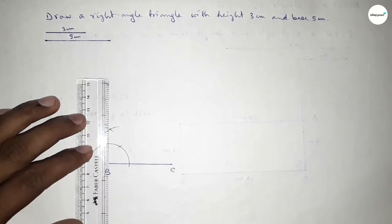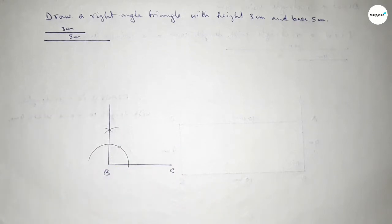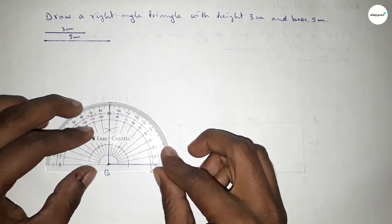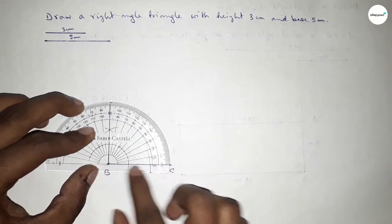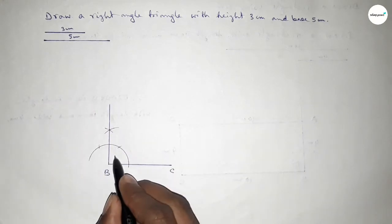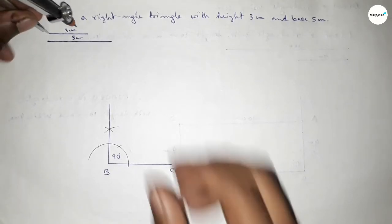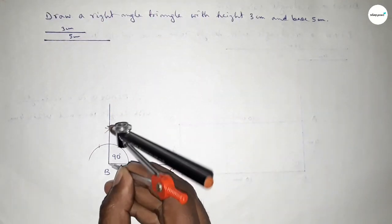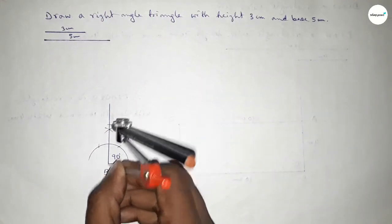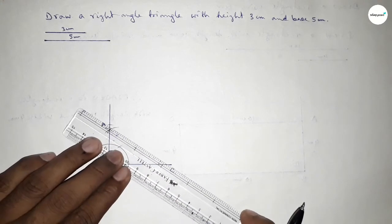Joining this side to get a 90 degree angle. Checking — this is a perfectly 90 degree angle. Now taking the length of height 3 centimeter using the compass and placing it at point B, marking point A at that measurement.